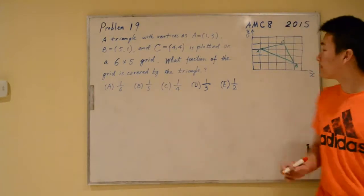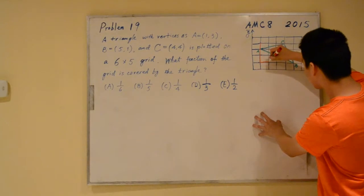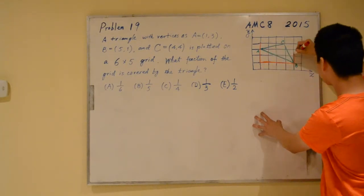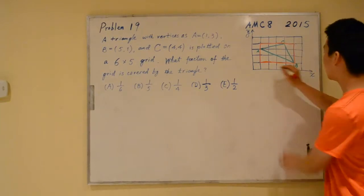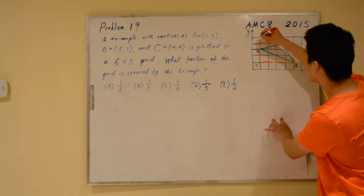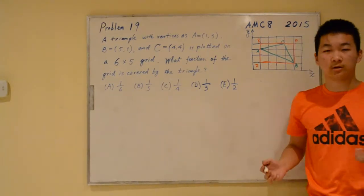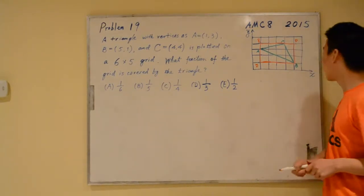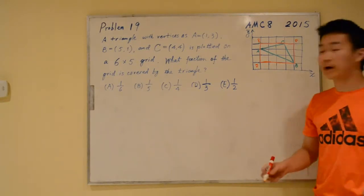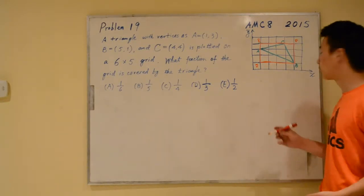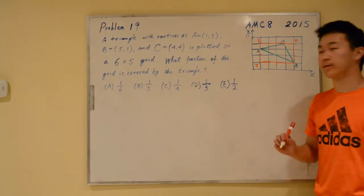First of all, we can draw this rectangle right here. Let's call this rectangle BDEF. This rectangle is very easy to find the area of. Also, there are three triangles within this rectangle that you can also easily find the area of.